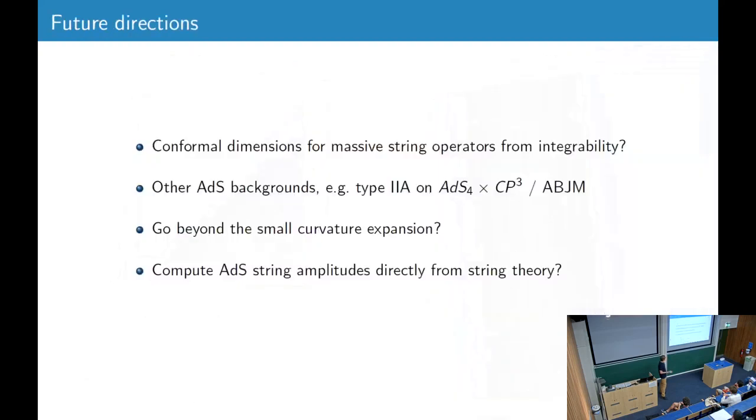So some open problems, can these conformal dimensions be computed independently, for example from integrability? We're also looking at other backgrounds like type IIA on AdS-4, dual to ABJM in the 't Hooft limit. It would be great if you can compute these string amplitudes beyond the small curvature expansion, and would be very important to also compute them directly from string theory. Thank you.